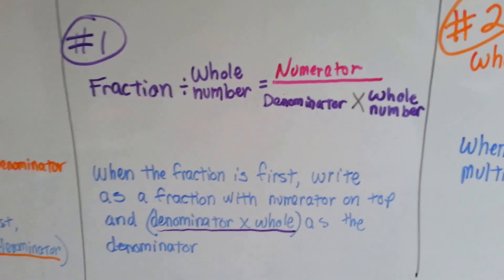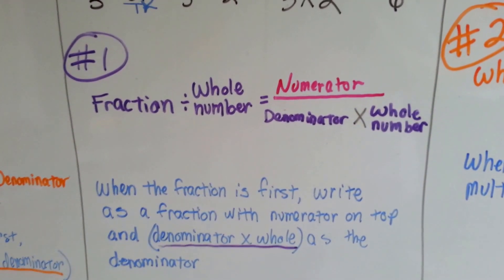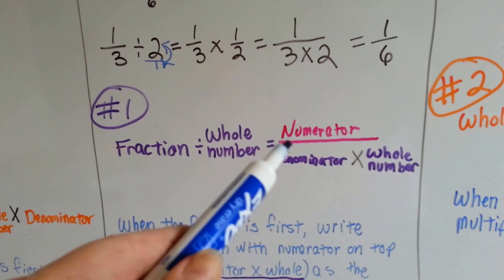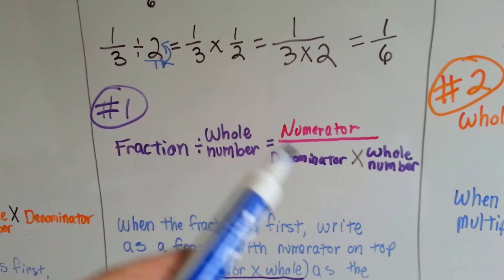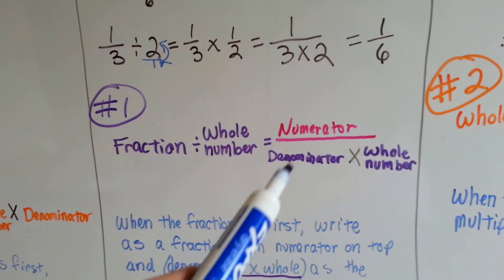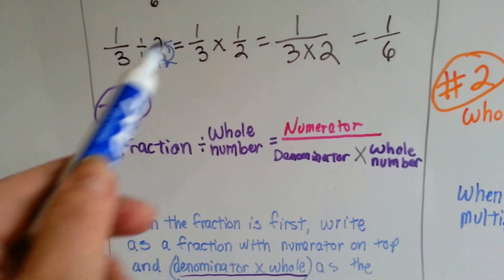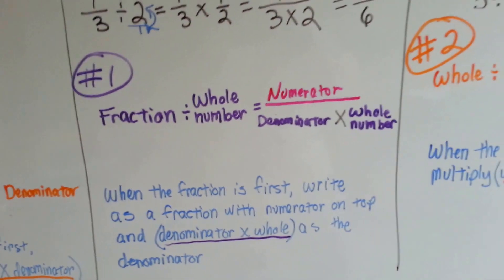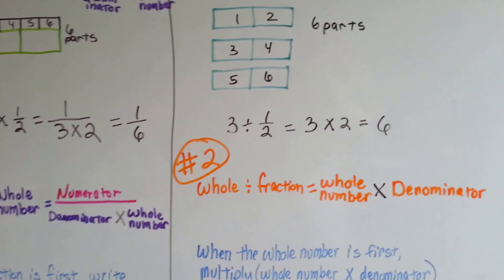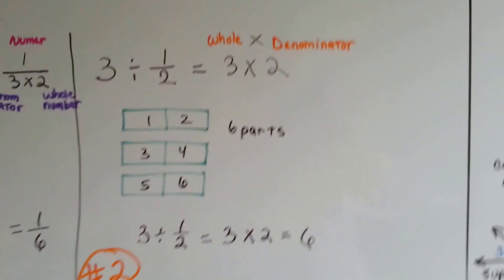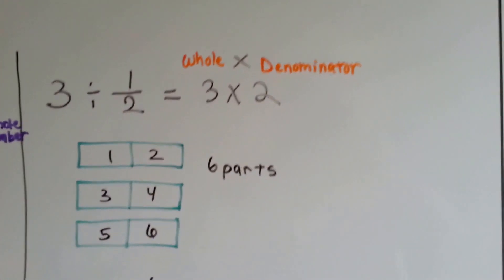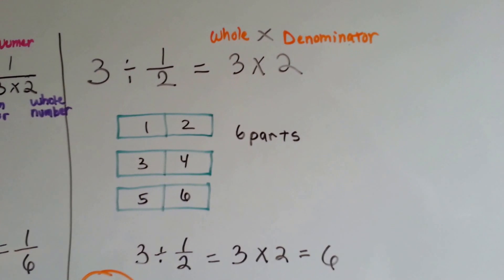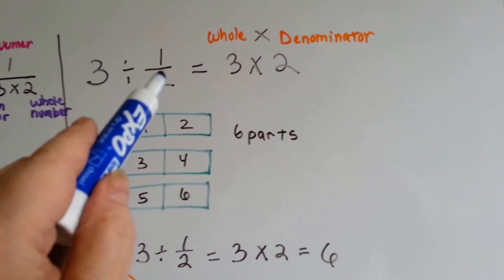So the rule for number 1 again is: when the fraction is first divided by a whole number, just think of it as that fraction's numerator over the denominator times the whole number.